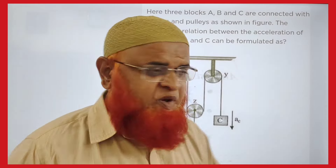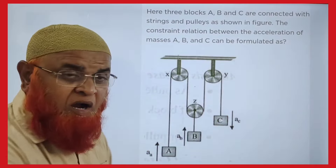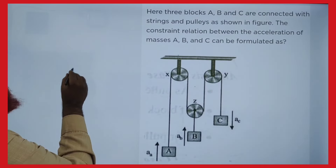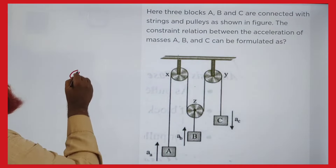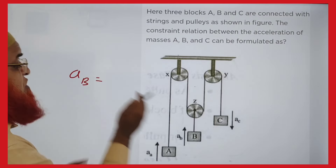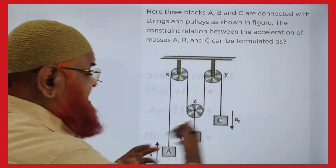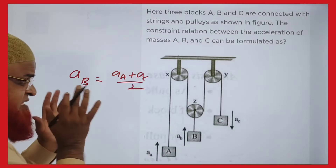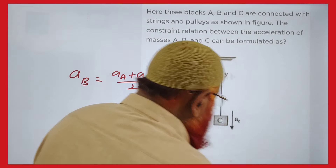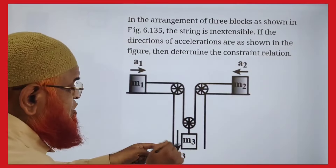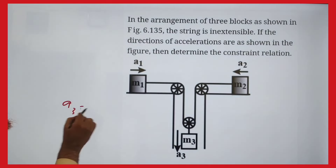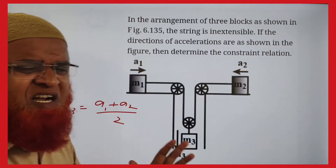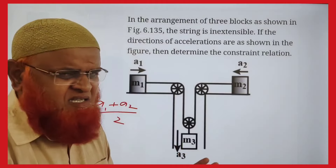For triple pulley, triple block cases, the shortcut is that the middle block's acceleration (a_B) equals the average of the side accelerations: a_B = (a_A + a_C)/2. Similarly, a3 = (a1 + a2)/2. This simple logic applies throughout.